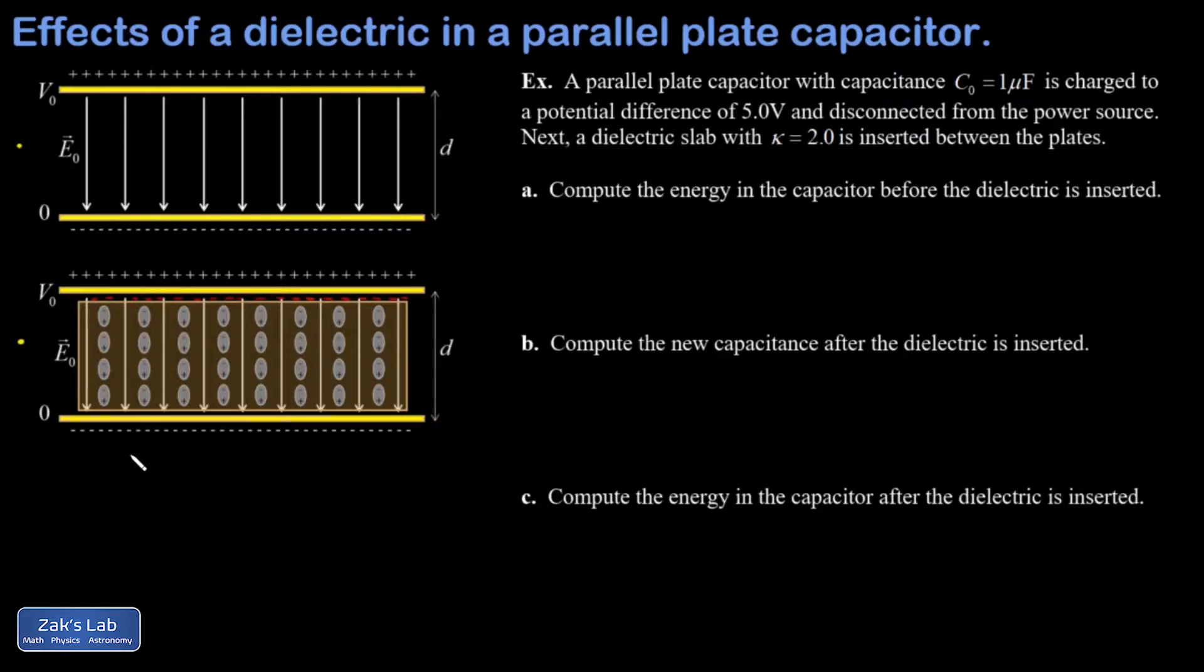Likewise at the bottom surface of the dielectric I've stretched my electron clouds a little bit upward, leaving a slight positive charge on the bottom surface of the dielectric. The net result of this polarization is that the dielectric itself now looks like a parallel plate capacitor with a positive plate on the bottom and a negative plate on the top.